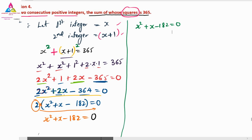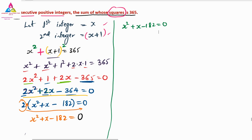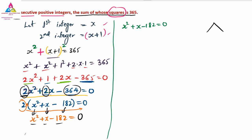Now splitting the middle term for X squared plus X minus 182 equals 0. When you add the two terms you must get X (coefficient 1), and when you multiply you must get minus 182 X squared. Since the product is negative, one number is negative — the greater number is positive and the smaller is negative.